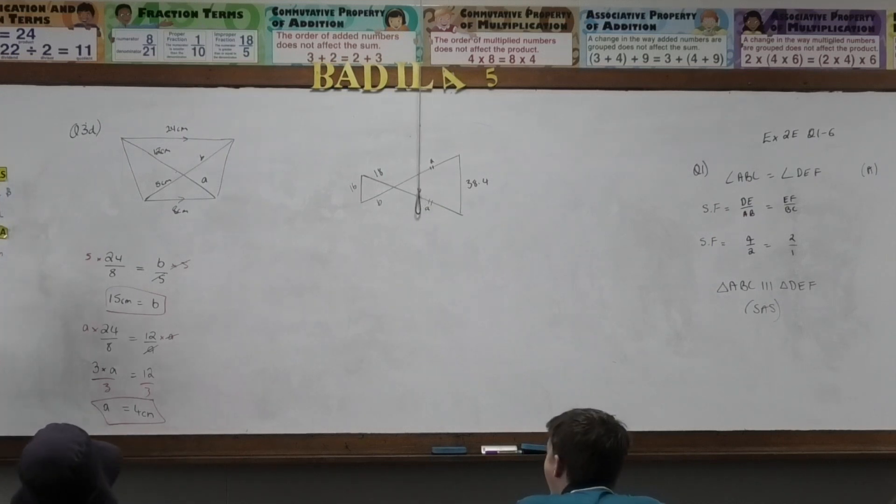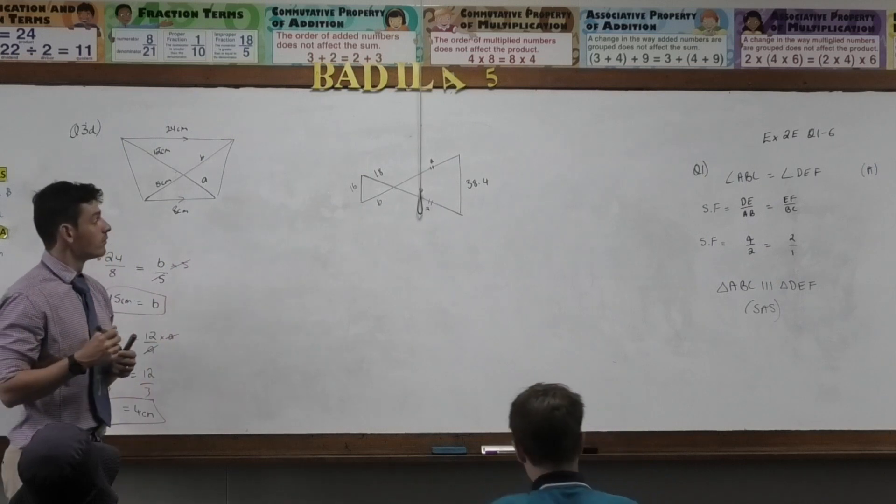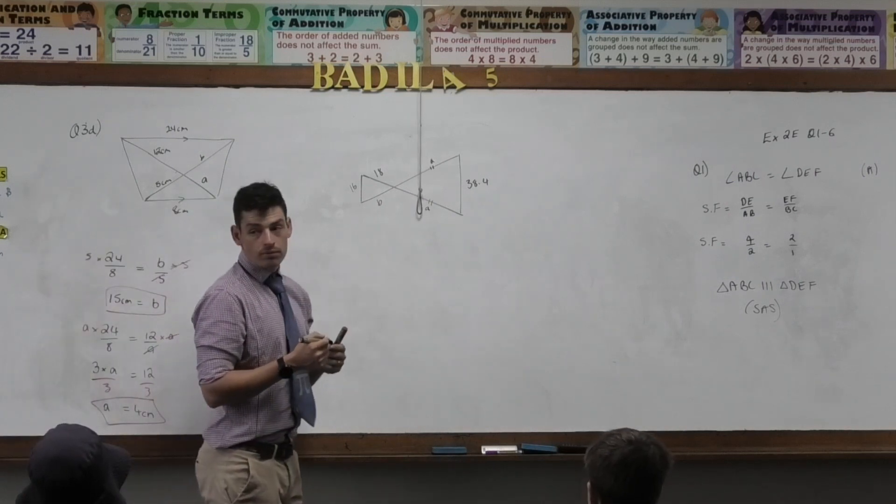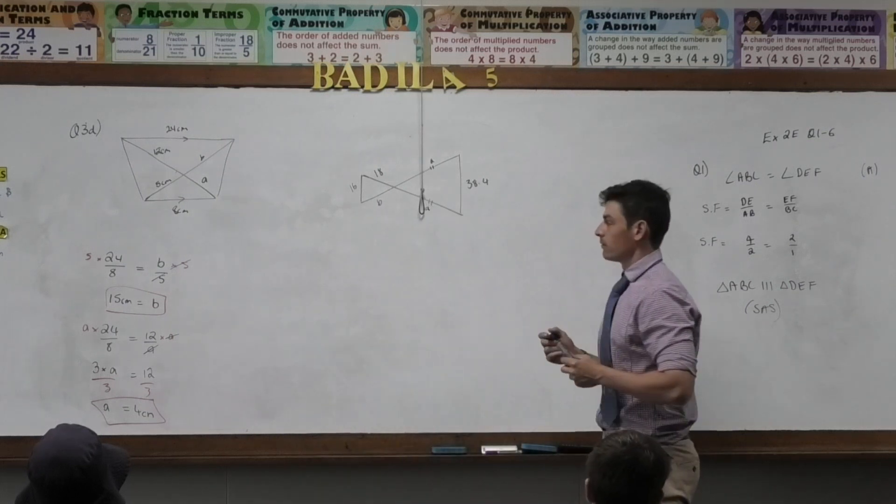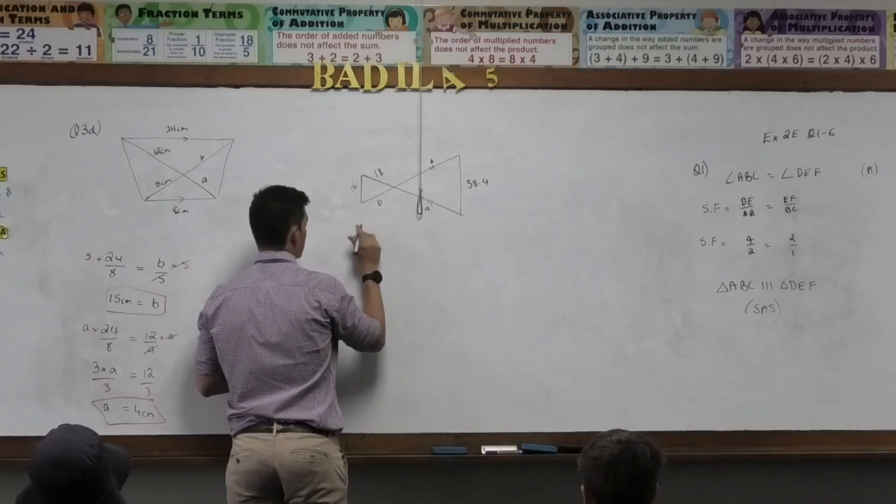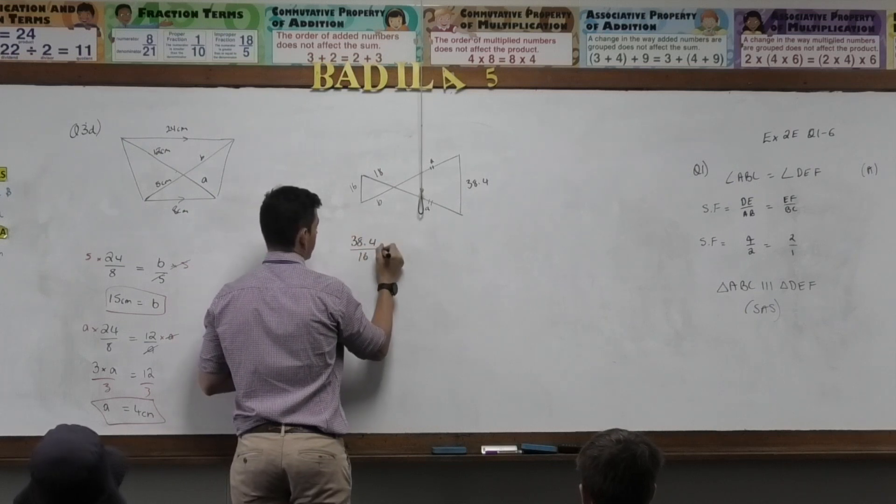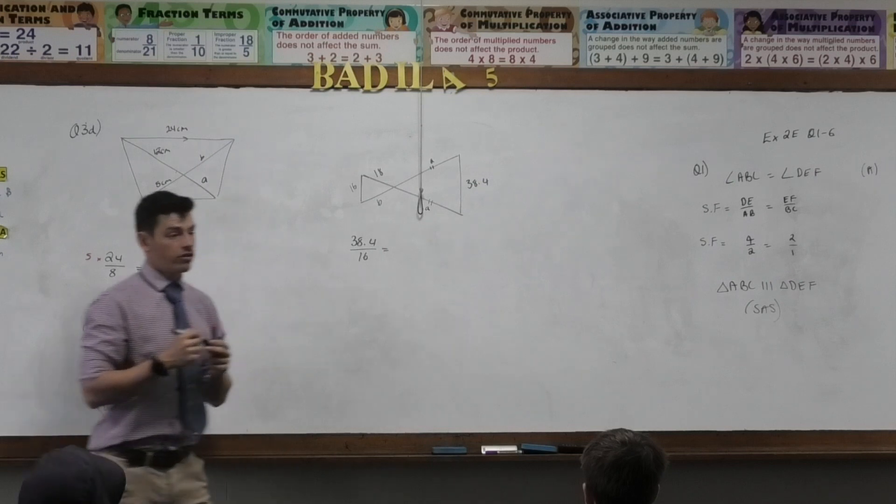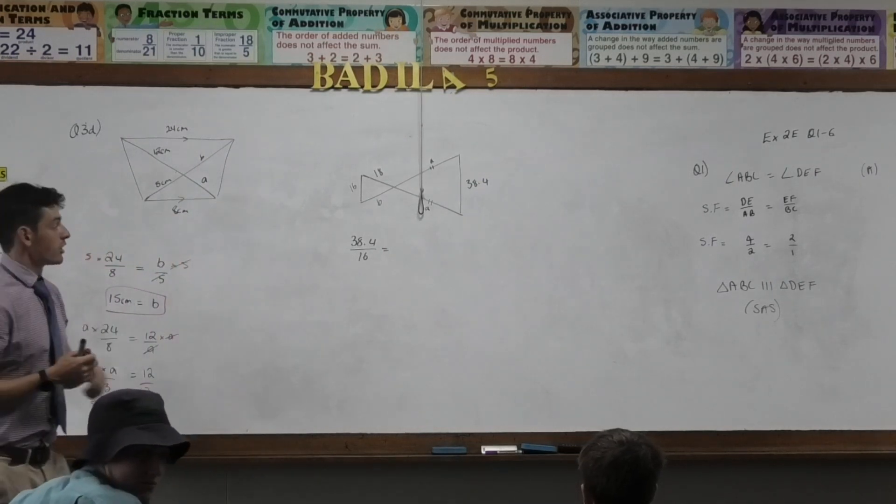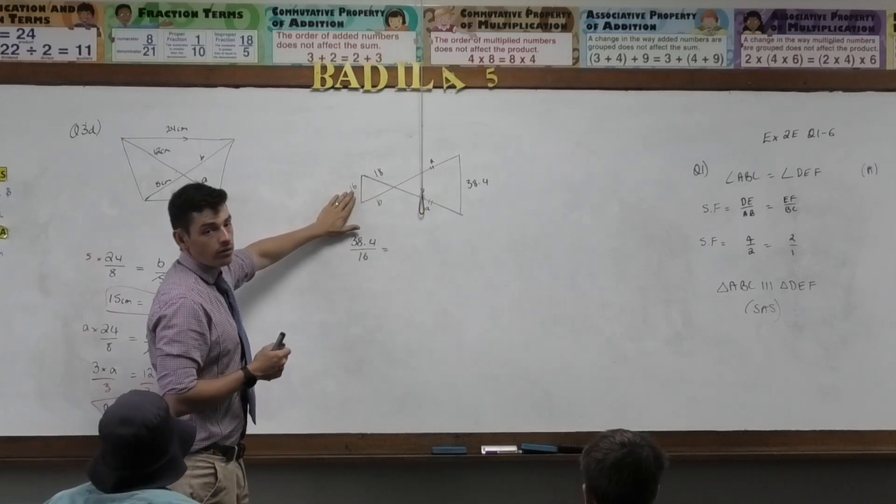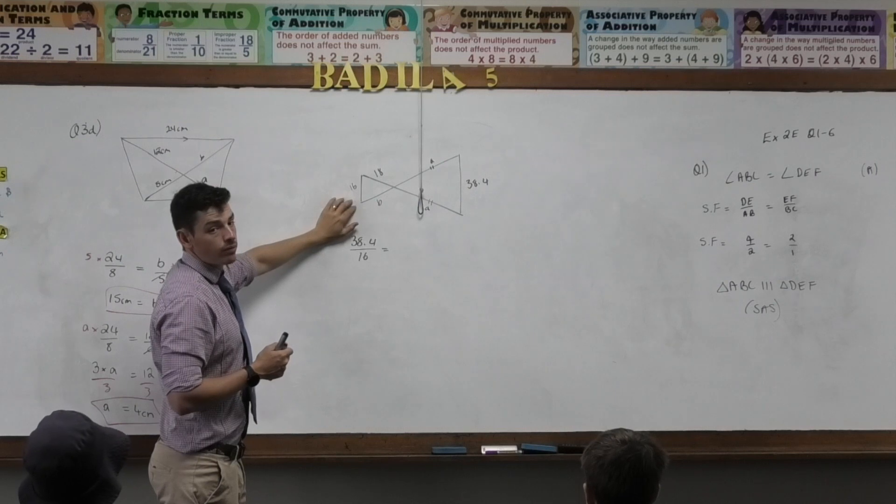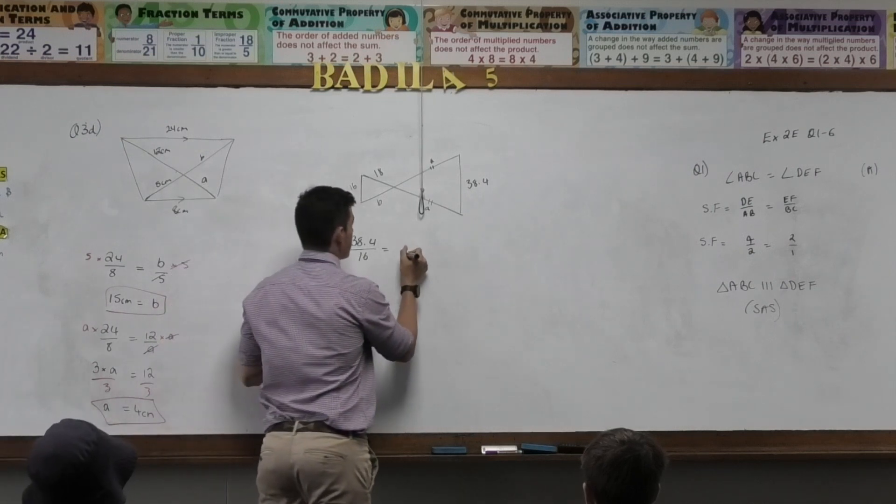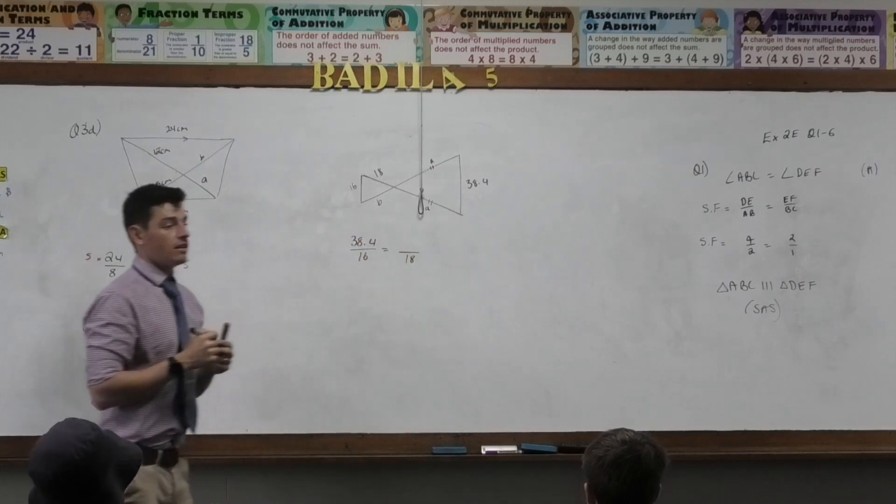So I'm not going to write anything without being told. Nick, Tom, what should I do first of all? 38.4 over 16. I like that. Equals, very good. And then Jake, you can take over. What should I write next? So he said this divided by this equals 30 over 18. Something over 18 is not 30. What over 18? A over 18. Very good.